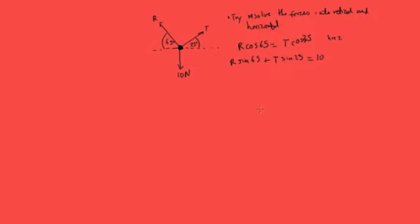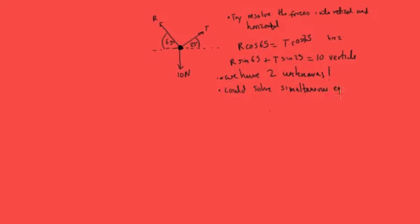We have two unknowns. We could solve a simultaneous equation, but that's going to be really difficult. And as these kinds of systems become more complex, they become really difficult to solve. So we're not going to use simultaneous equations to find the two unknowns.